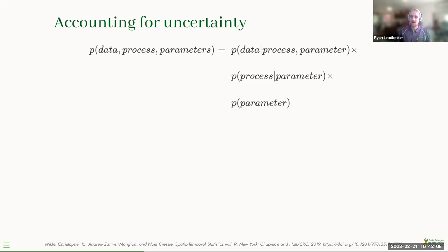To do this we use a Bayesian hierarchical model, which are commonly used in spatial statistics and spatiotemporal stats. Rather than defining a big complicated likelihood function, we break this up into a set of conditional models. The first level of the hierarchy is the data model, which models the observation process. The second level is the process model, which models the underlying degradation of the belt. The third is the parameter model, which for this case is just the priors.